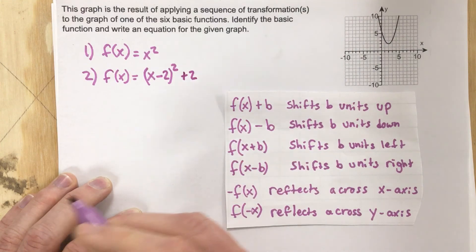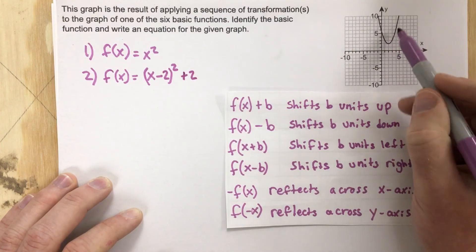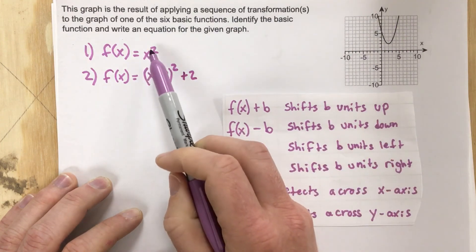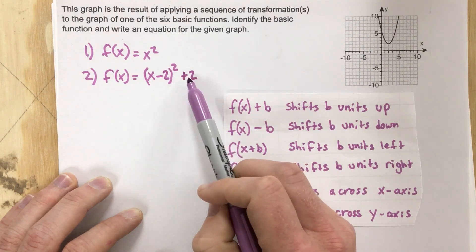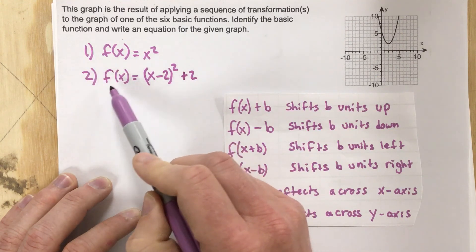So our function that's graphed right here is the parent function x squared but it's shifted to the right two and it's shifted upwards two. And that's our solution for part two.